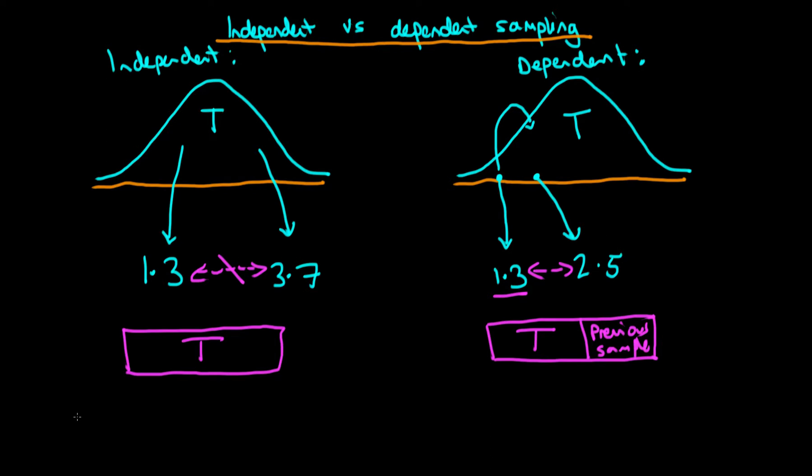Examples of independent sampling are algorithms like rejection sampling, the inverse transform method which relies on you having to know the cumulative density function, and finally importance sampling. There are other methods but these are the three most common.